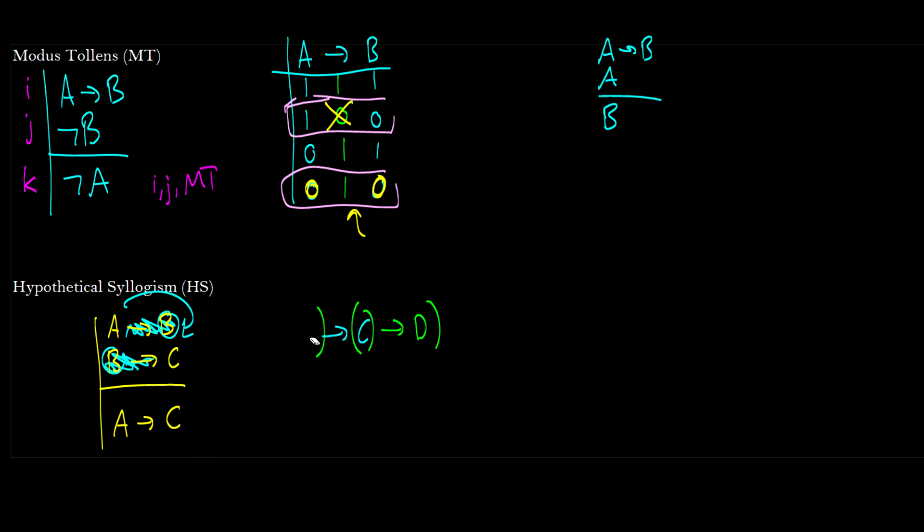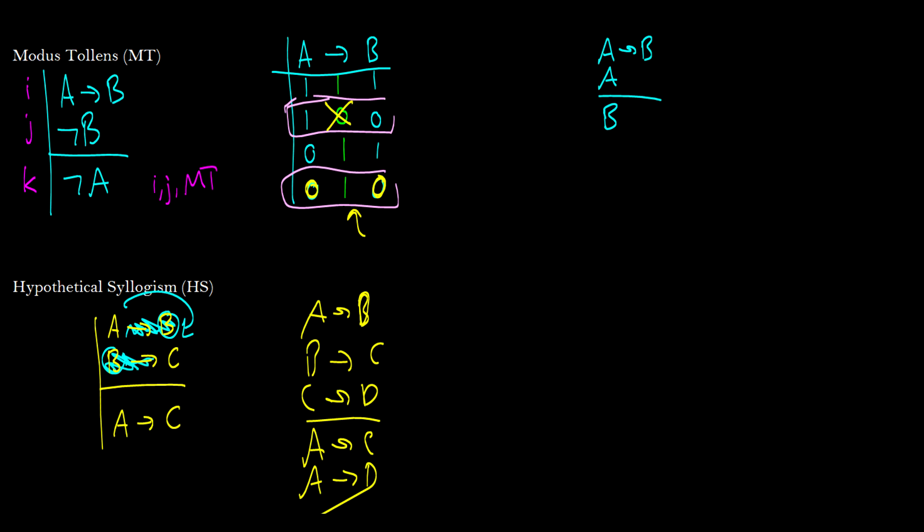Now, if you have a similar proof, let's say A arrow B, B arrow C, C arrow D, you'd have to claim A arrow C first, and then you could go A arrow D. This is a technical thing, and I don't really care if you were to produce proofs for me that use this like this, because I think it's obvious, but some people are really anal about their philosophical logic, which you'll see why eventually, but for the sake of this, it really doesn't matter. That's hypothetical syllogism.